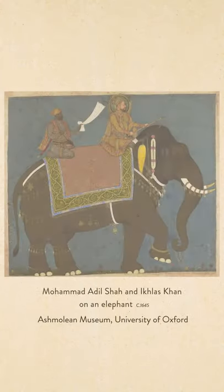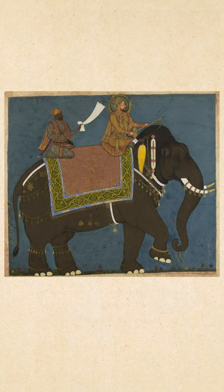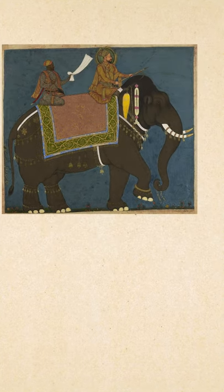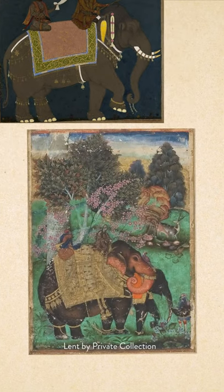The image is titled Mohammed Adil Shah and Eklas Khan on an elephant, and it belongs to the mid-1640s by two Bijapur painters, Haider Ali and Ibrahim Khan. Although the name of the painting features the king and his prime minister or nobleman Eklas Khan, the chief subject is actually the elephant — and this is not surprising because the Sultans of the Deccan often had favourite elephants.